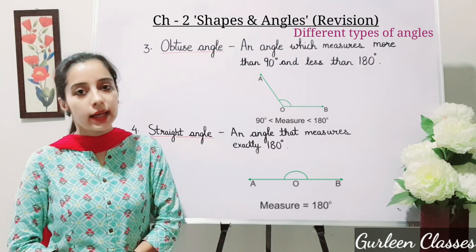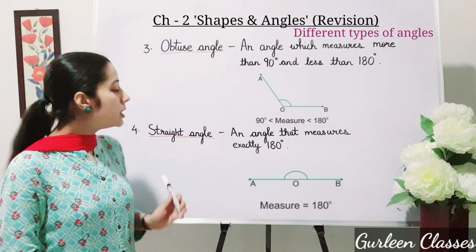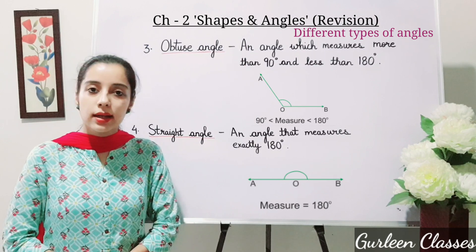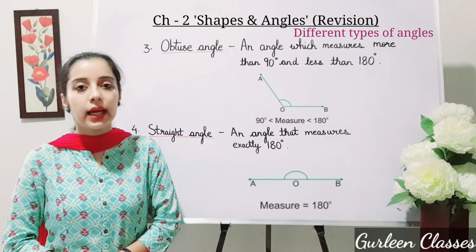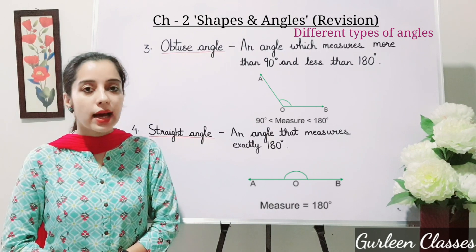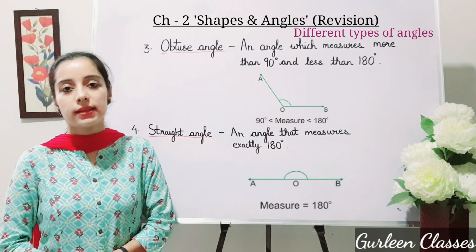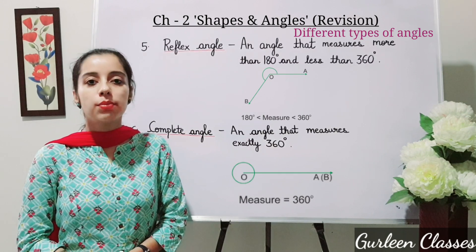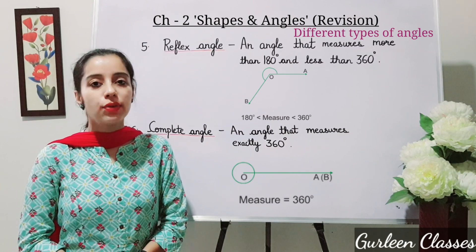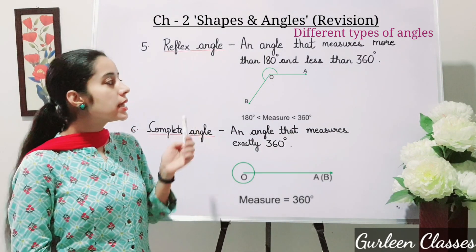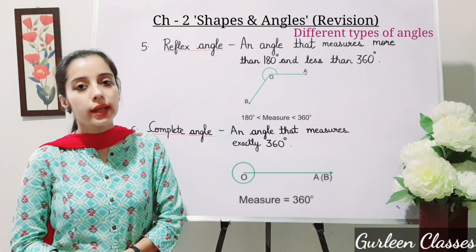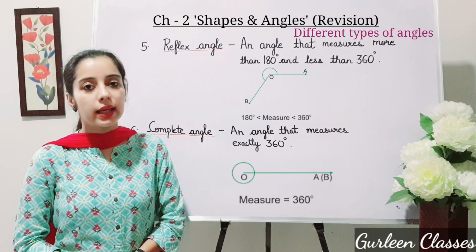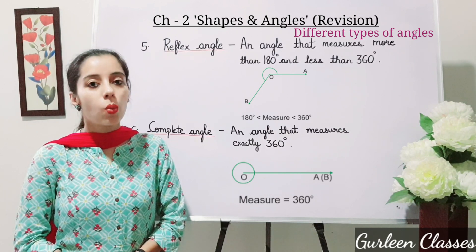Number four: Straight angle. An angle that measures exactly 180 degrees is called a straight angle. This is an example of a straight angle. Number five: Reflex angle. An angle that measures more than 180 degrees and less than 360 degrees. This is an example of a reflex angle. For example, 195 degrees — it is more than 180 degrees and less than 360 degrees.